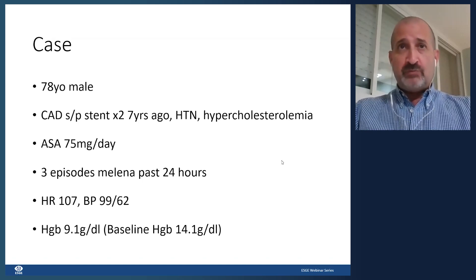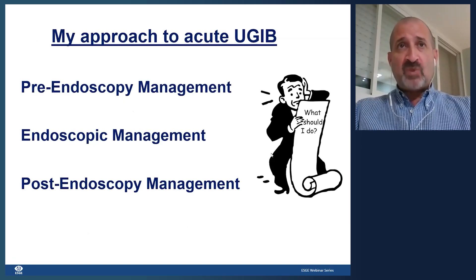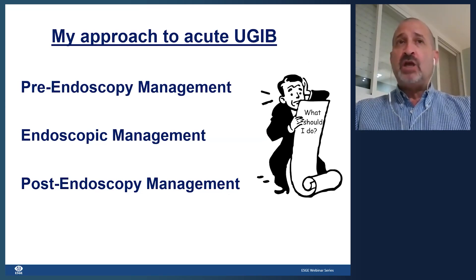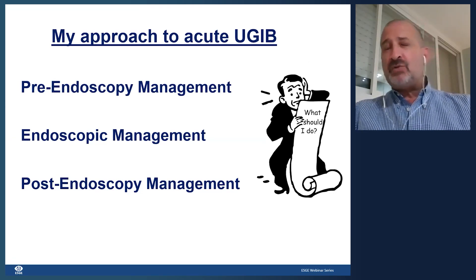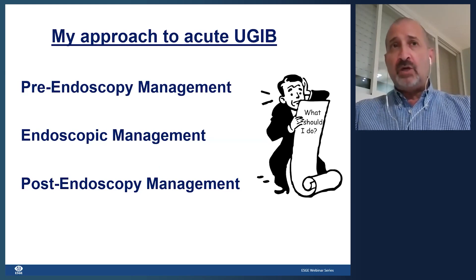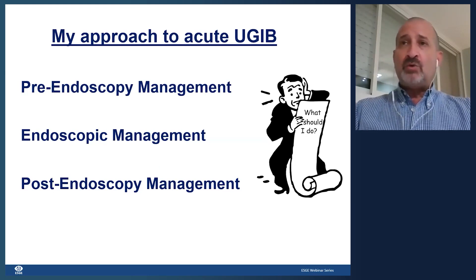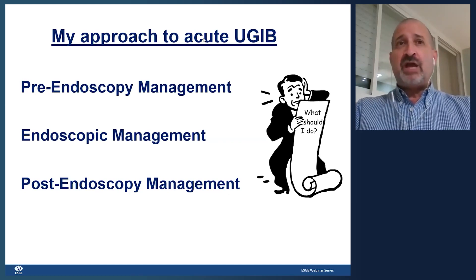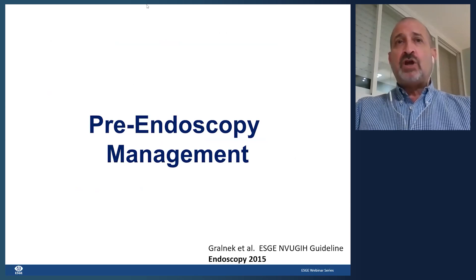His systolic blood pressure is 99 when lying down. Initial hemoglobin is 9.1, but his baseline is 14.1. I like to think of the approach to acute upper GI bleeding in three phases: what to think about before endoscopy, during endoscopy, and after endoscopy.